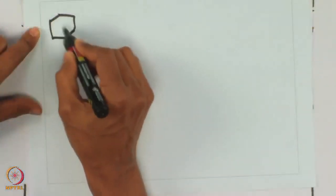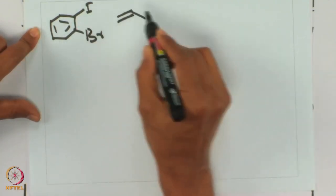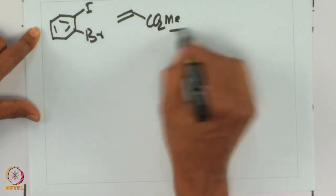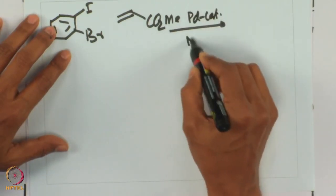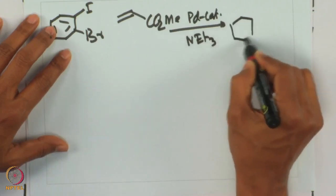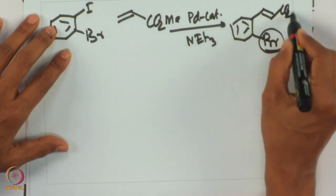With two more examples we will conclude the HEC reaction discussion. An interesting substrate has both iodo and bromo substituents present, and selectively only the iodo reacts since oxidative addition is faster there. Using palladium(0) catalysis and triethylamine, the final product is a bromo-containing substituted compound — that is quite interesting.